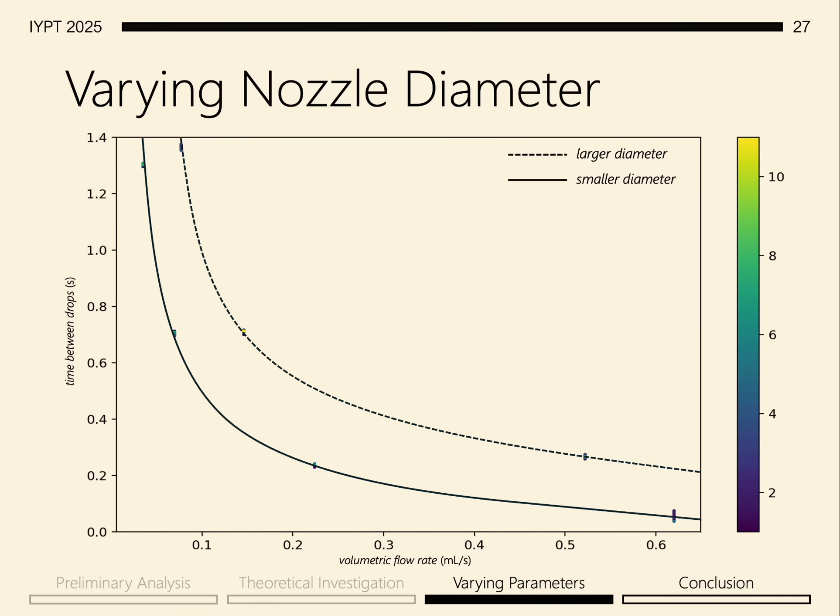By observing the trend for different diameters, we can see how having a larger nozzle diameter leads to a greater time between drops. This can be explained by looking at the shape of the droplets. For a larger nozzle diameter, there's a significantly larger critical volume at which the droplet falls. This makes sense because surface tension acts along the contact region between regions of different phase, namely the water and the nozzle.